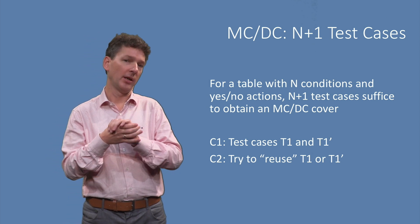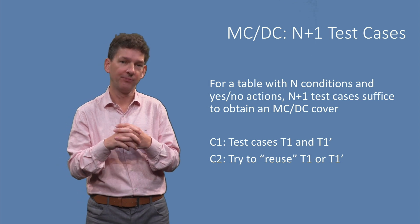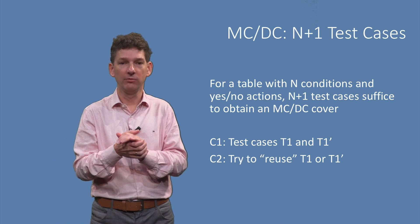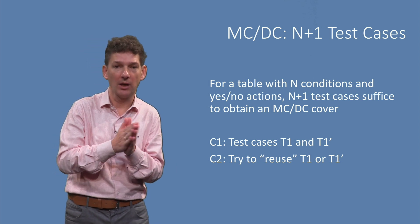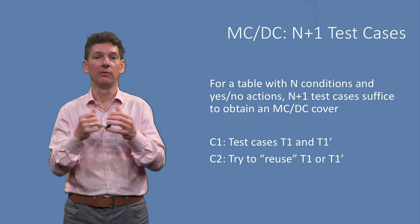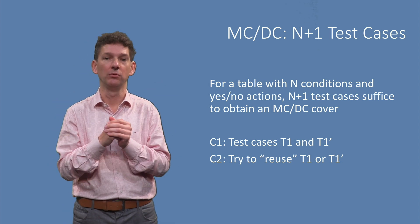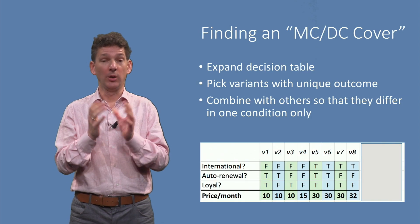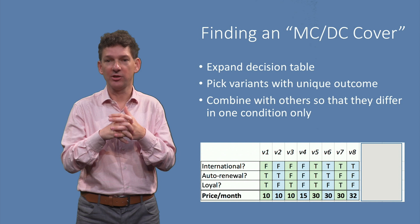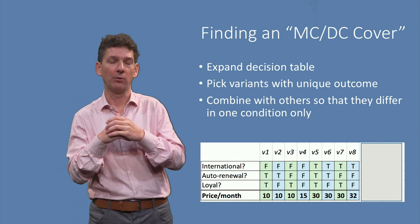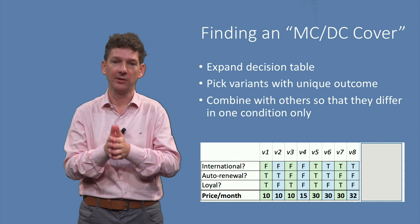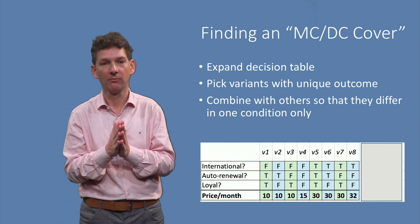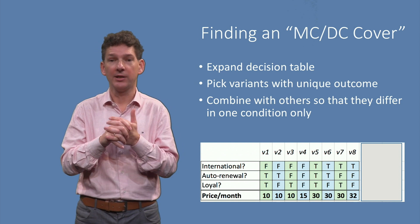While one might think that this requires 2 times n test cases for a table with n conditions, in fact only n plus 1 are needed, assuming all conditions are yes-no conditions. The reason is that if for a condition C1 we derive test cases T1 and T1', then for a different condition C2 we don't need a fresh T2, but can often reuse T1 or T1' instead as its starting point. Conceptually, the easiest way to arrive at an MCDC test suite is to first expand the decision table to the full 2 to the power of n variants, making them all explicit, and then for each condition you can pick two variants which differ only in the value for that condition, and in the output. To see how this works, let's look at our example again.